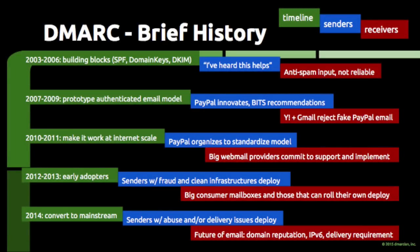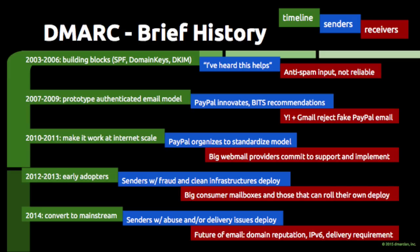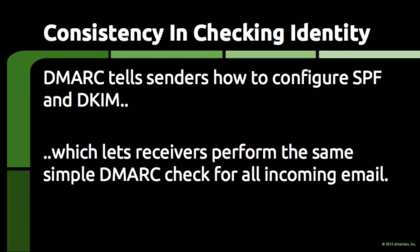The underlying technologies that associate a domain with a piece of email have been around for a long time, and people have tried their best in many different contexts to make the technologies useful. SPF, which is a way of publishing a list of servers that are authorized to send email on behalf of a domain, has been around since 2003. DKIM, which is a method of adding a tamper-proof domain seal to a piece of email, has roots going back to 2005. Instead of relying on a single technology, DMARC brings consistency to how these existing technologies are configured, so that when a piece of email is received, a simple check can be performed to see if the email really does come from the domain it says it comes from.